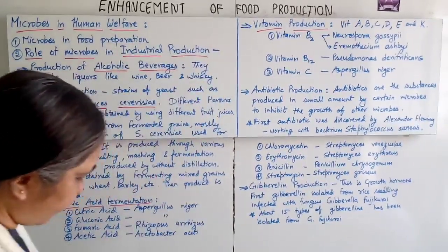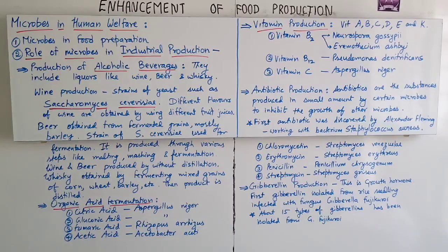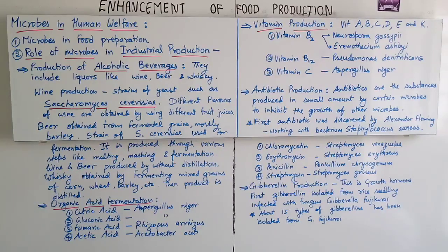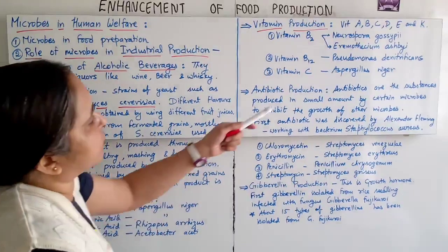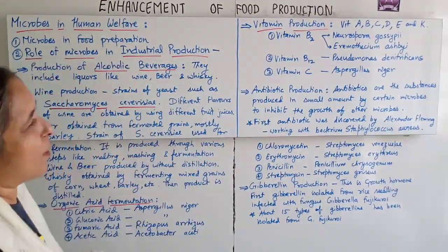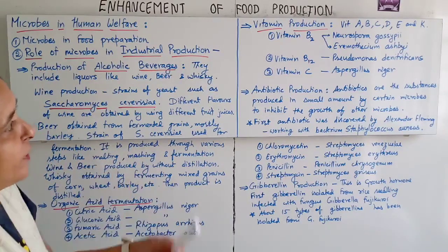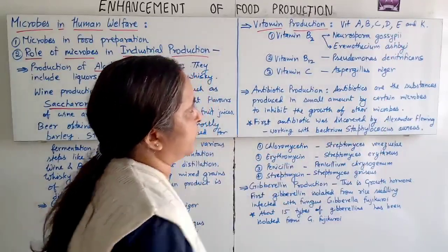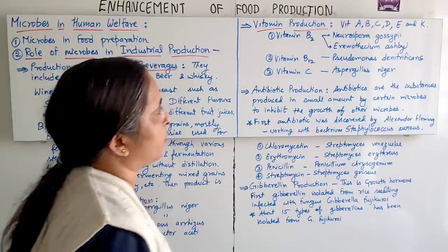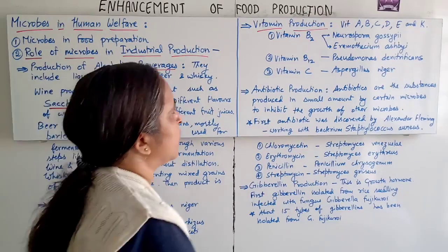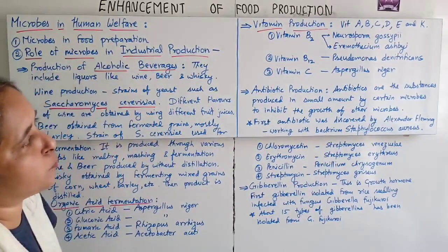Next is vitamin production. There are different types of vitamins — A, B, C, D, E, and K — which may be water-soluble or fat-soluble. Since all vitamins are not produced in the human body, they must be consumed through food or tablets. Vitamin B2 is produced with the help of Eremothecium ashbyii and Neurospora gossypii.